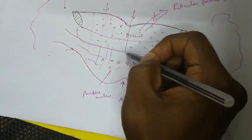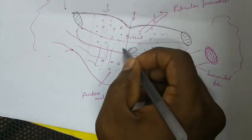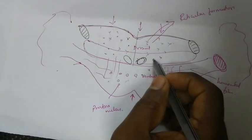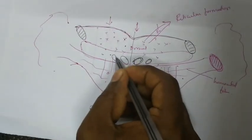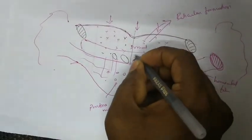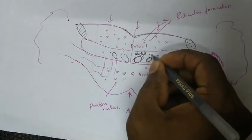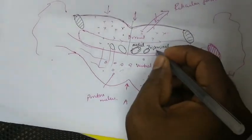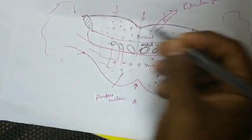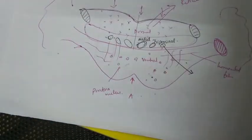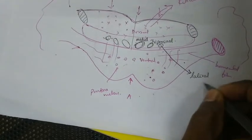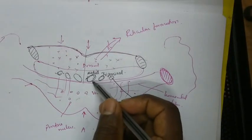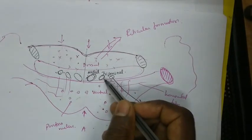The middle portion on either side of the midline is occupied by an oval lemniscus called the medial lemniscus. Lateral to this area we have the trigeminal lemniscus on either side. Lateral to the trigeminal lemniscus we have another ascending pathway which is the lateral lemniscus. So these are the three lemnisci arranged in order from medial to lateral: the medial lemniscus, then the trigeminal lemniscus, then the lateral lemniscus.